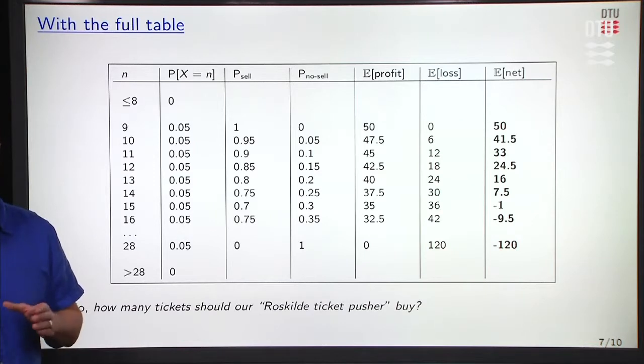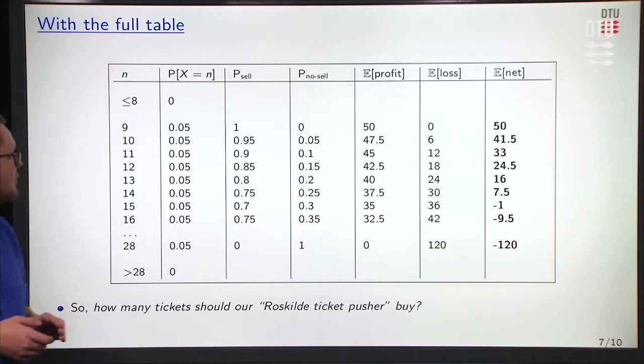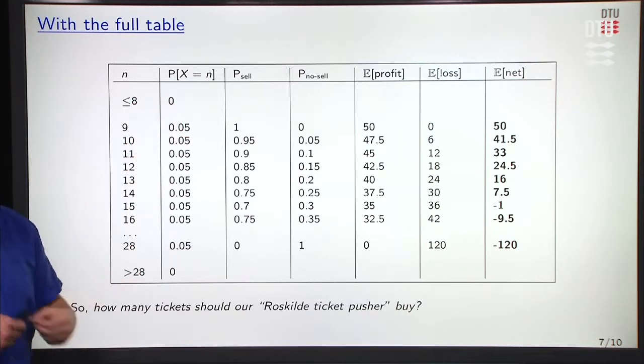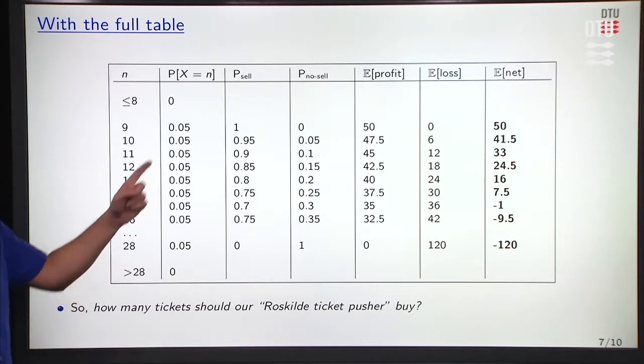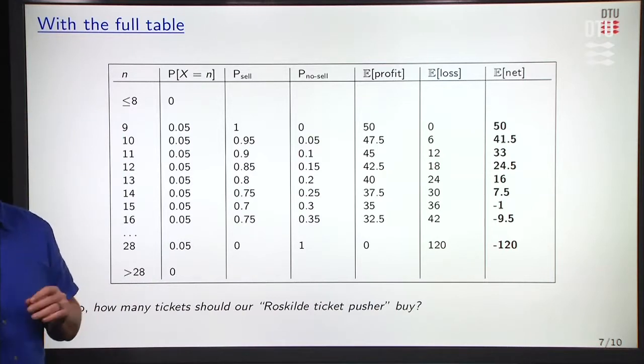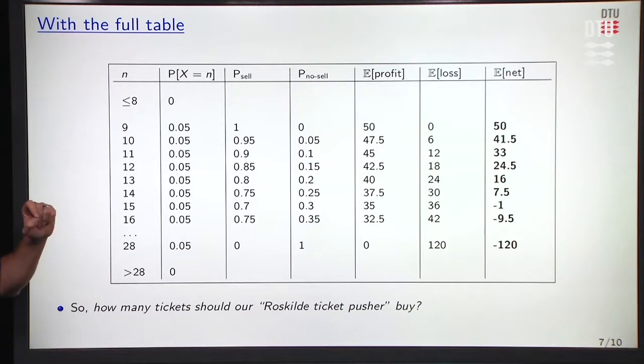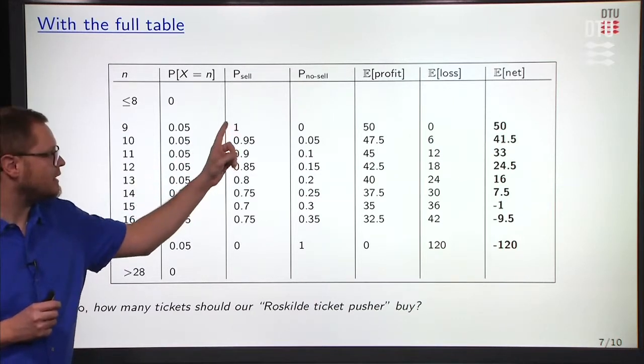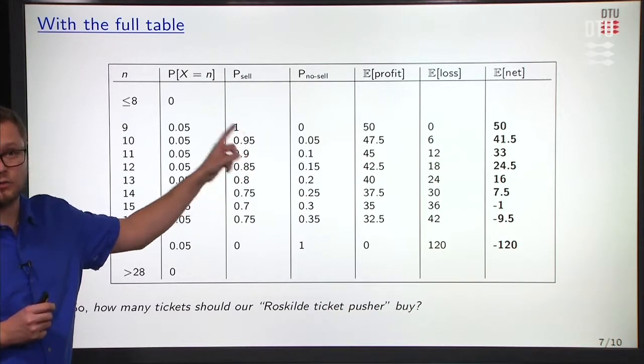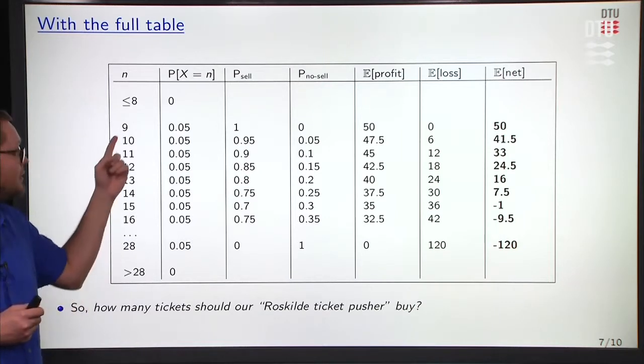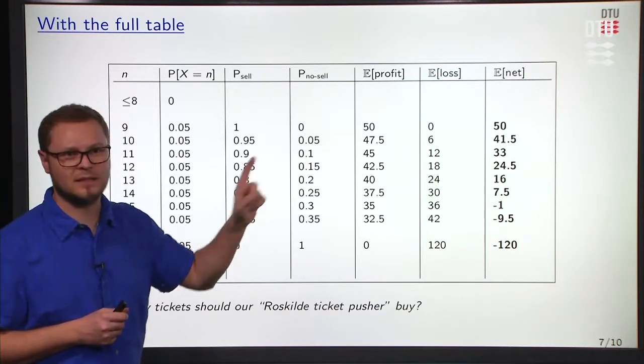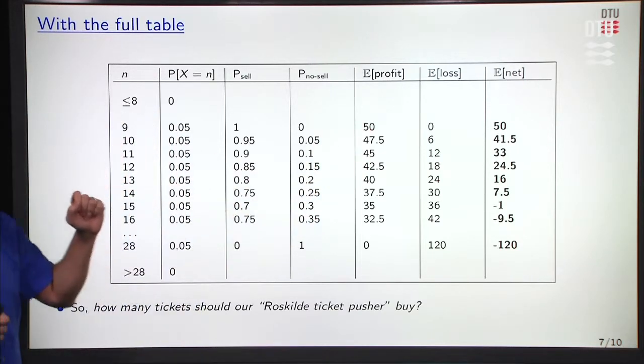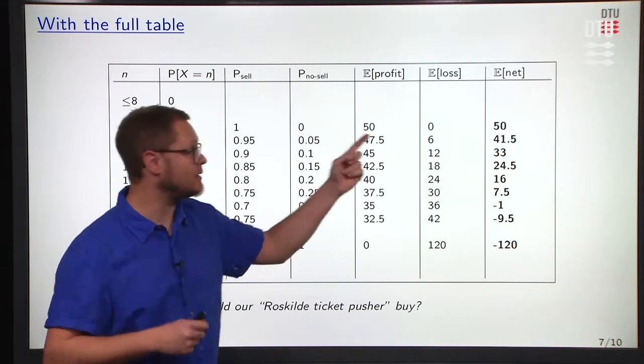If we were to draw this table for each and every case, we have the case, for instance, of n less or equal to 8. We know that the probability that this happens is 0. We say we're sure we will sell more than 8 tickets. So the probability of sell, no sell, etc. is not relevant. It is sure we'll buy more than 8 tickets. Looking at the ninth ticket, the probability that we exactly sell 9 tickets is 5%. The probability that we sell 9 tickets or more is 1. That's what we said. We know we're going to sell more than 8 tickets. So the probability we sell 9 or more is 1. The probability that we don't sell this ninth ticket is 0. That means in terms of expected profit, we have 50 expected profit from the ninth ticket. And the expected loss is 0 because the probability is 0 times 120 equals 0. So the expected net profit eventually is of 50 from buying this ninth ticket.